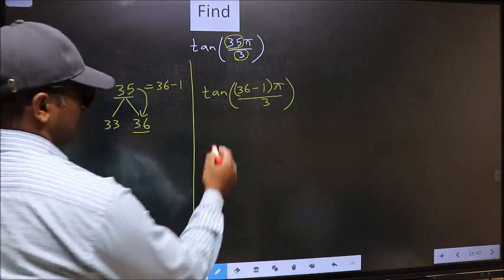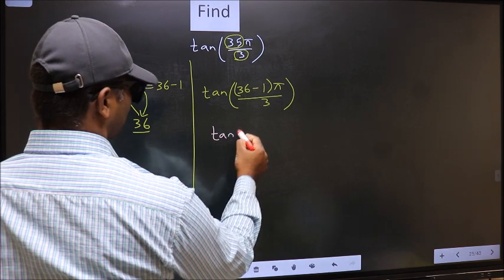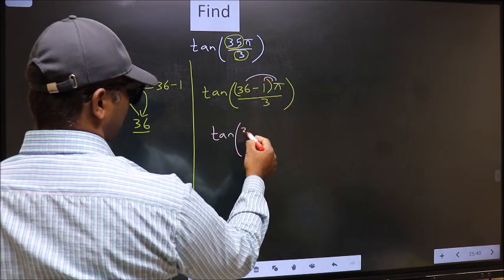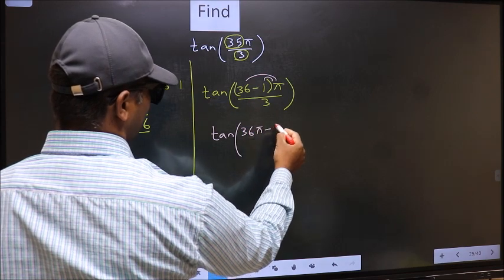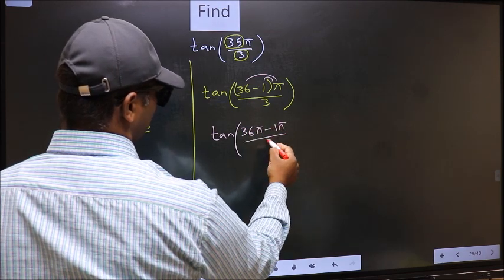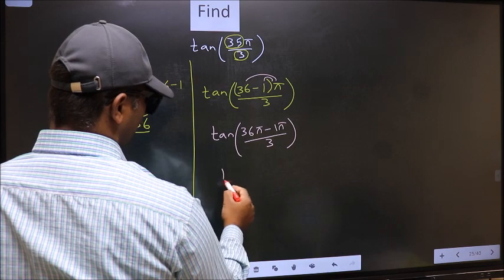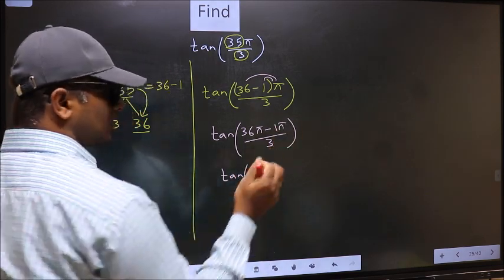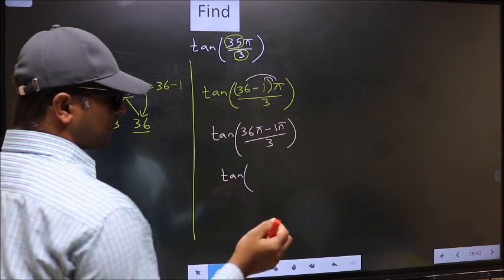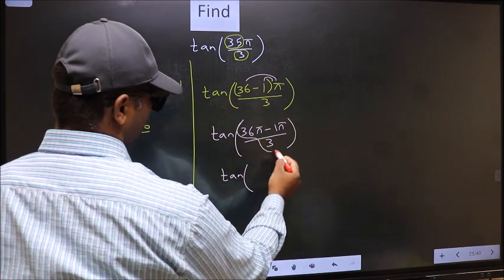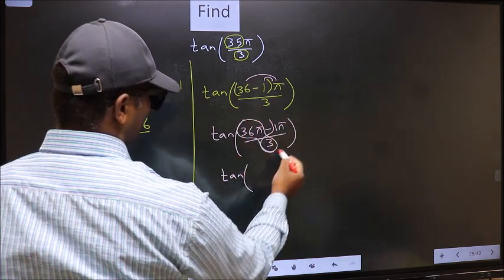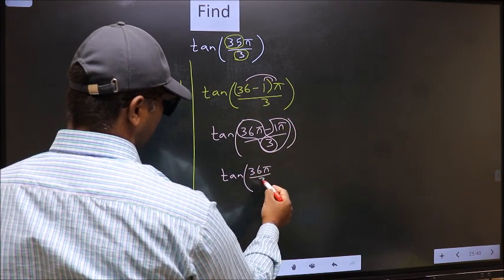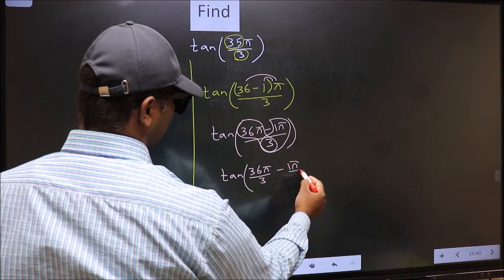Next, tan. Now you should open the brackets. We get 36π minus 1π by 3. Now tan. Over here, we should split the denominator in this way, that is 36π by 3 minus 1π by 3.